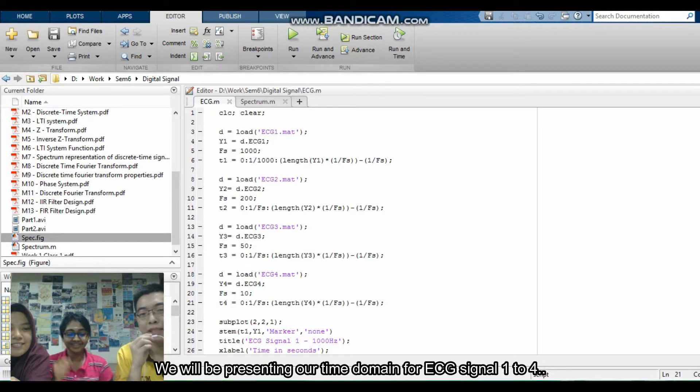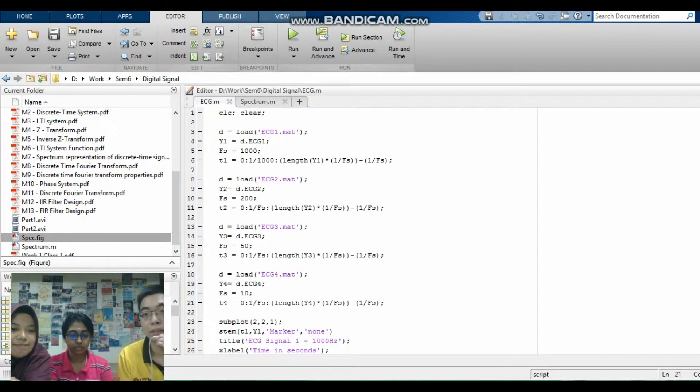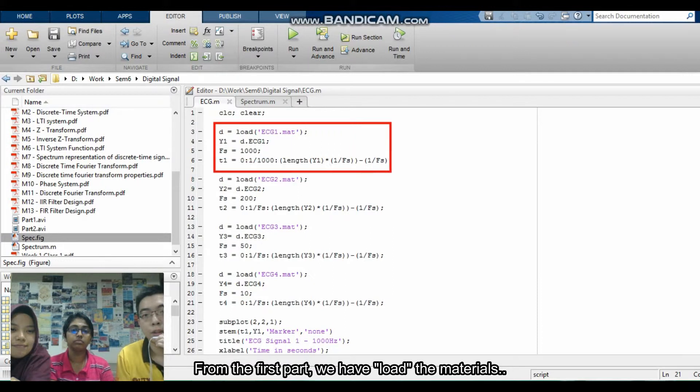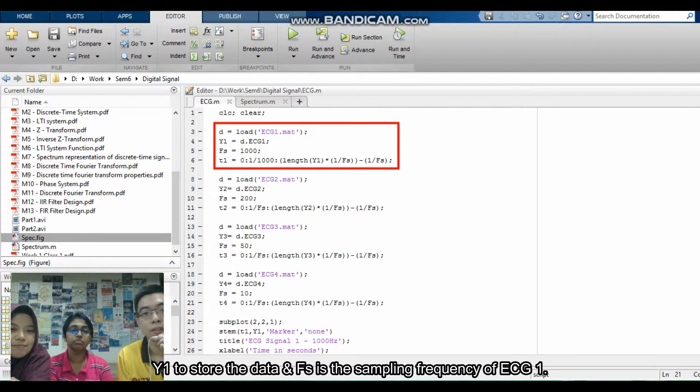Now we will be starting presenting our time domain for our ECG signal from 1 to 4. As seen from this code, from the first part of the code, we actually have to load the material and then the Y1 to store the data. And FS will be the frequency, the sampling frequency for ECG1.